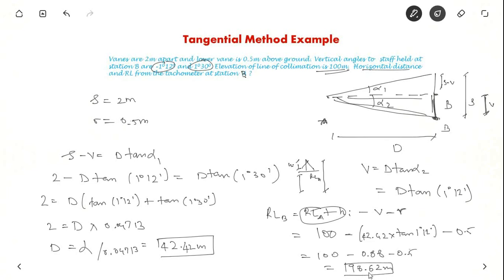That's all about the tangential method. I hope you understood the tangential method concept as well as the example. You can always draw the diagram even if you forget the formulas, and you should understand the important terms. In the previous two videos I had talked about tachometric survey. I hope you understood that too. Thanks for watching. To continue watching more videos, please subscribe to our channel.